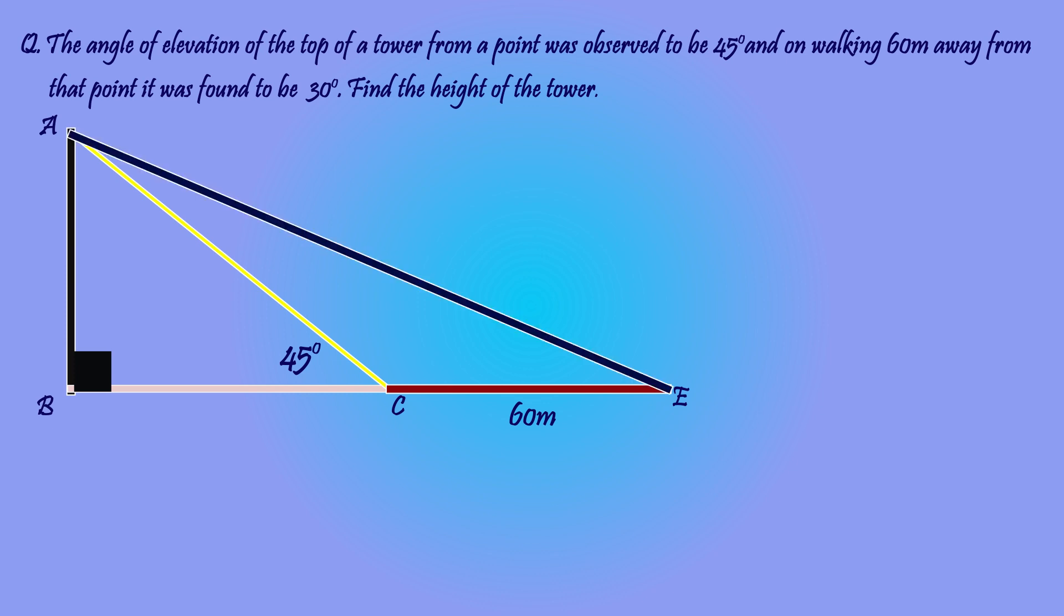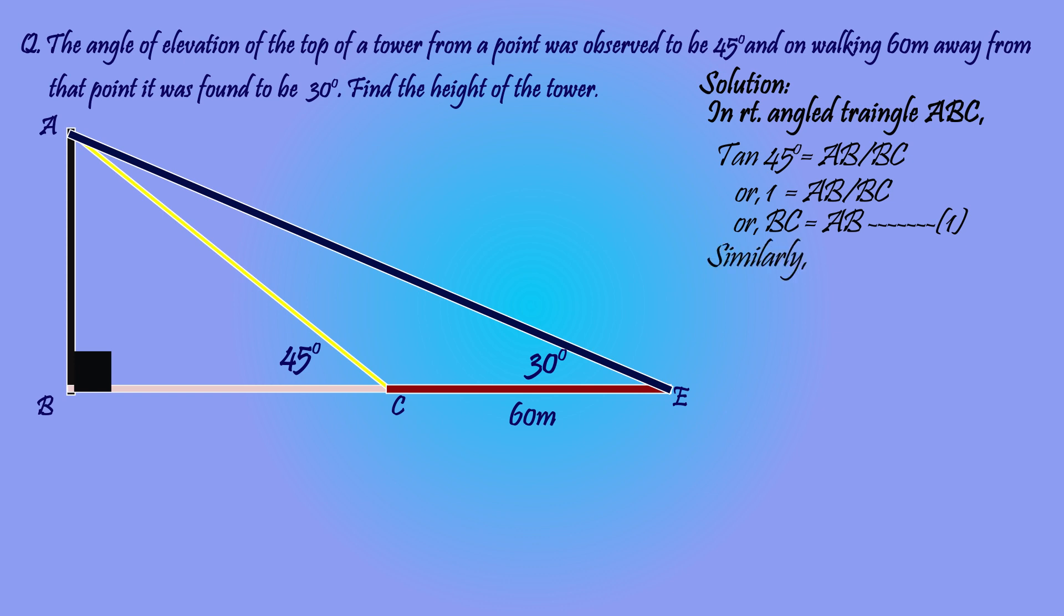In right angled triangle ABC, tan 45 degrees equals AB by BC. As the value of tan 45 is 1, or instead of tan 45 we'll write 1 equals AB by BC. Or by doing cross multiplication we get BC equals AB. Let it be equation 1.